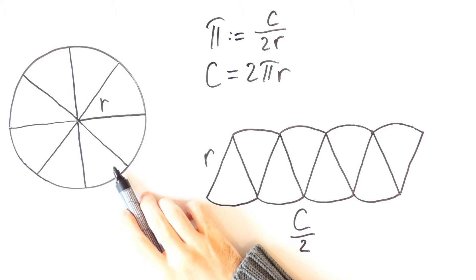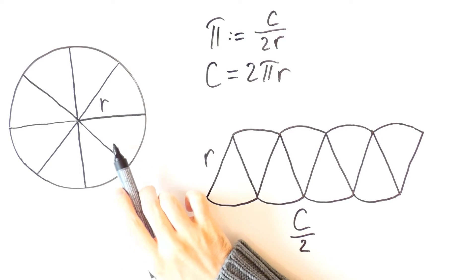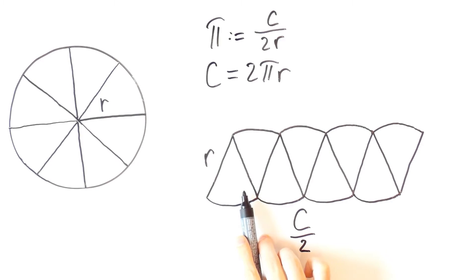We divide the circle into 8 parts. The more parts we divide it into, the more this figure resembles a rectangle. Here are a few examples of what it looks like.